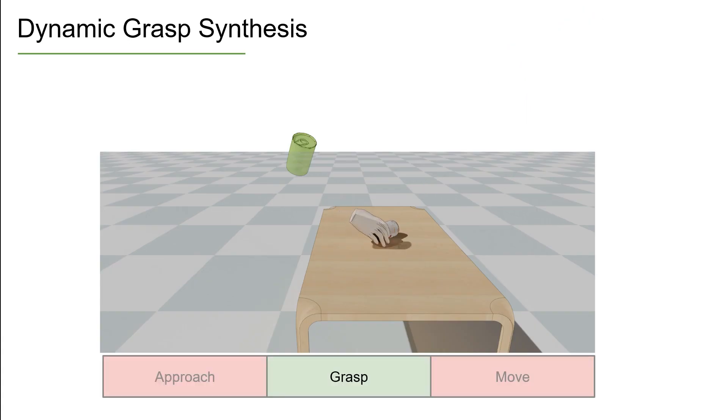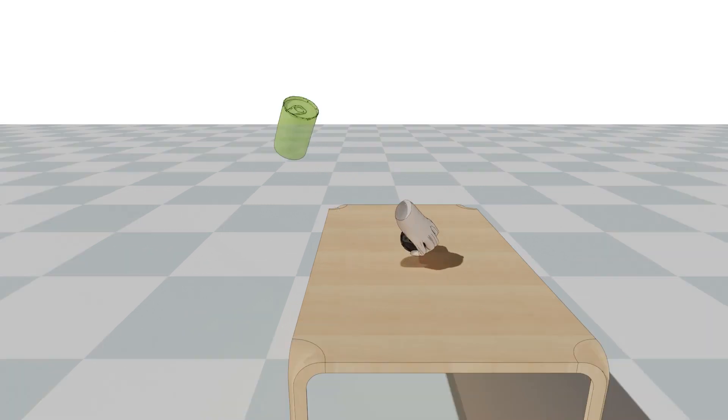Approaching the object, grasping, and moving the object to a target 6D pose. We achieve all these steps in a natural and physically plausible way.